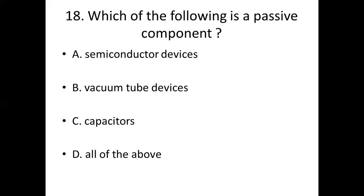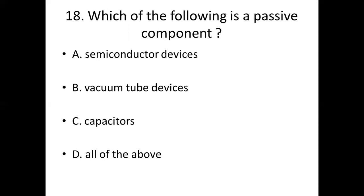Question 18: Which of the following is a passive component? Option A: semiconductor device. Option B: vacuum tube device. Option C: capacitors. Option D: all of the above. Answer: Option C — capacitors.